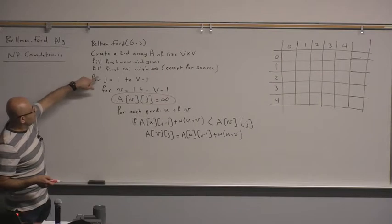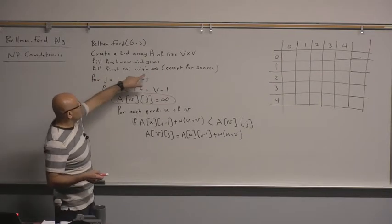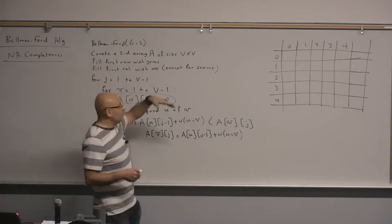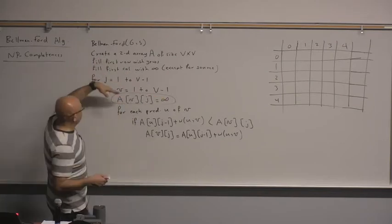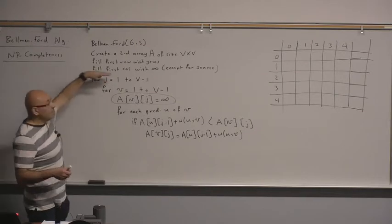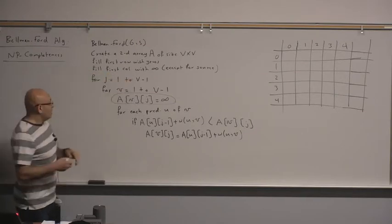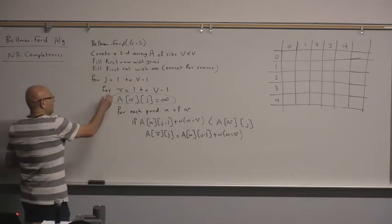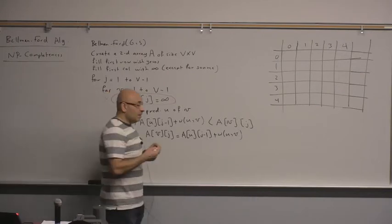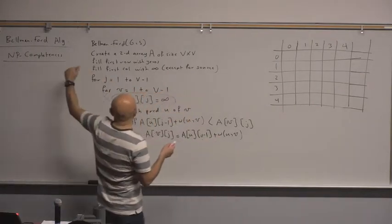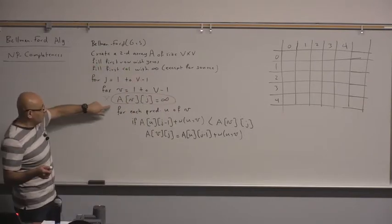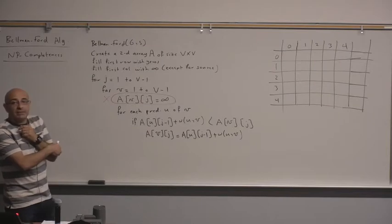Instead of filling the first column with infinity, you fill all rows with infinity — the first row is zero and all remaining rows with infinity — then you don't need that extra line. You need to initialize everything to infinity somehow, whether you initialize it all at once or only one cell at a time.